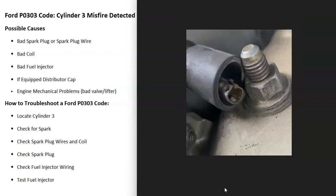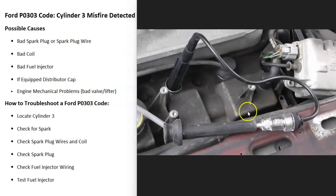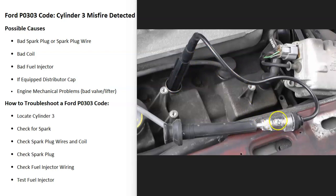If everything looks good, the next step is to check whether you're getting spark at cylinder number three. Some people hold the spark plug wire close to a ground and see if it jumps. The method I like is using an inline spark tester — these are low-cost items, less than $10, and I'll put a link down below. One side goes to the spark plug, the other to the coil, then you start the engine. If you're getting spark, you'll see it flashing inside the tester.